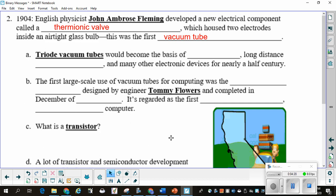Triode vacuum tubes would become the basis for radio, long-distance telephone, and many other electronic devices for nearly a half century. Vacuum tubes, it was the end-all, be-all. It was how things communicated.